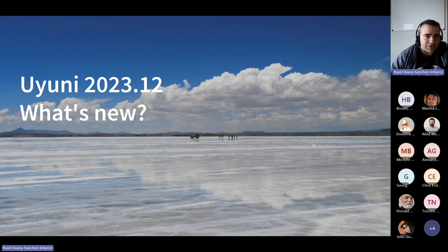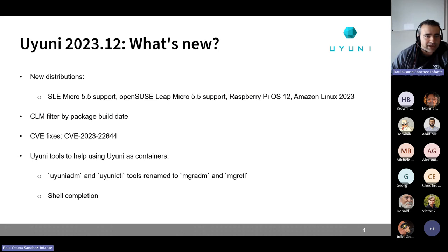You can tell me whether you already installed it or read about it - you can use the chat or send some reactions, no need to talk if you don't want to. So what is new: there is support for four new distributions - SUSE Linux Enterprise Micro 5.5, openSUSE Leap Micro 5.5, Raspberry Pi OS 12 (which is based upon Debian 12), and Amazon Linux 2023.